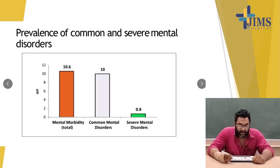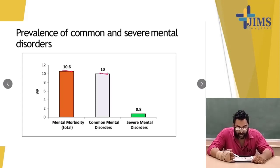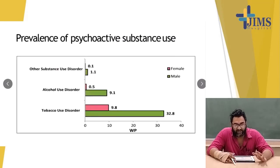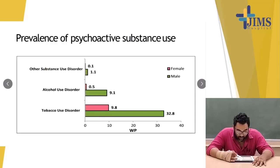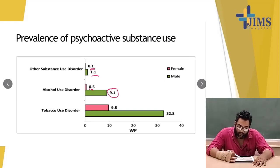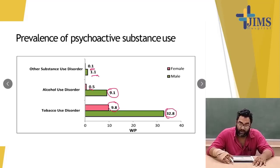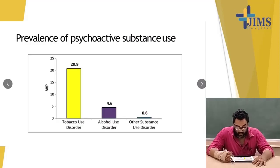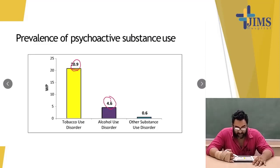The prevalence of common mental disorder was 10%, while severe mental disorder was 0.8% — a smaller proportion but still representing a large number of patients with significant morbidity and mortality. Regarding substance use by gender, alcohol use disorder in females was 0.5%, while in males it was higher. Tobacco use disorder affected 38.2% of males, and combined male and female tobacco use disorder was 29%, while alcohol was 4.6% and other substance use disorder was 0.6%.